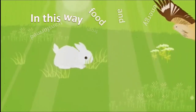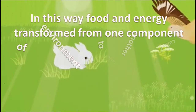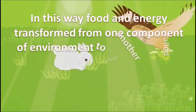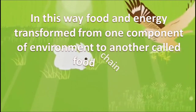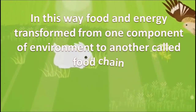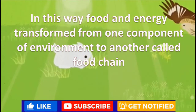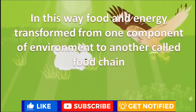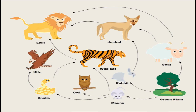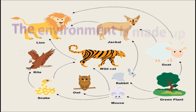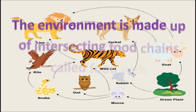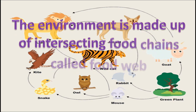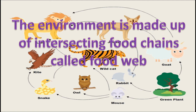In this way, food and energy are transferred from one component of the environment to another — this is called a food chain. The environment is made up of a large number of intersecting food chains, which is called a food web.